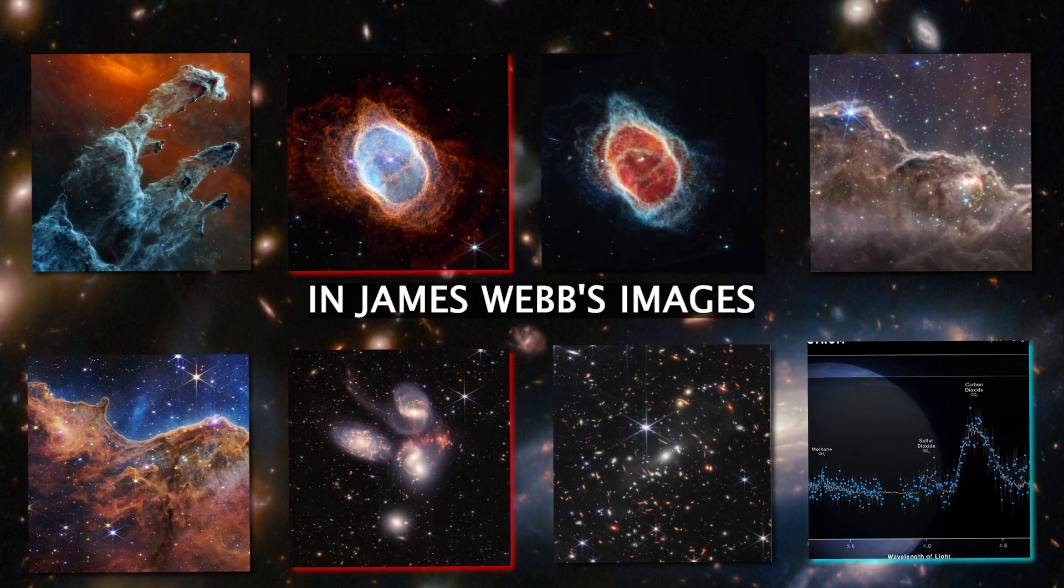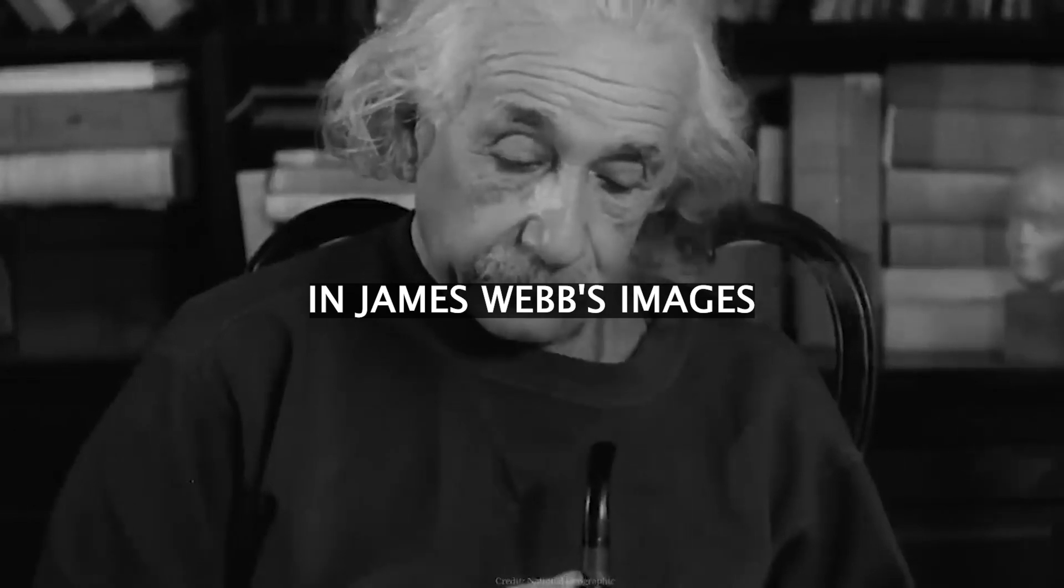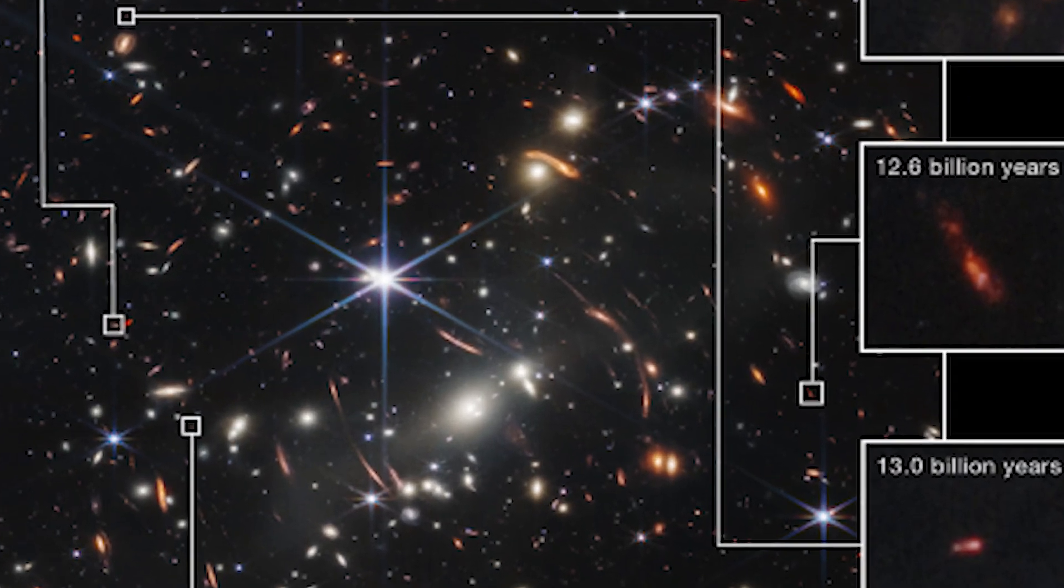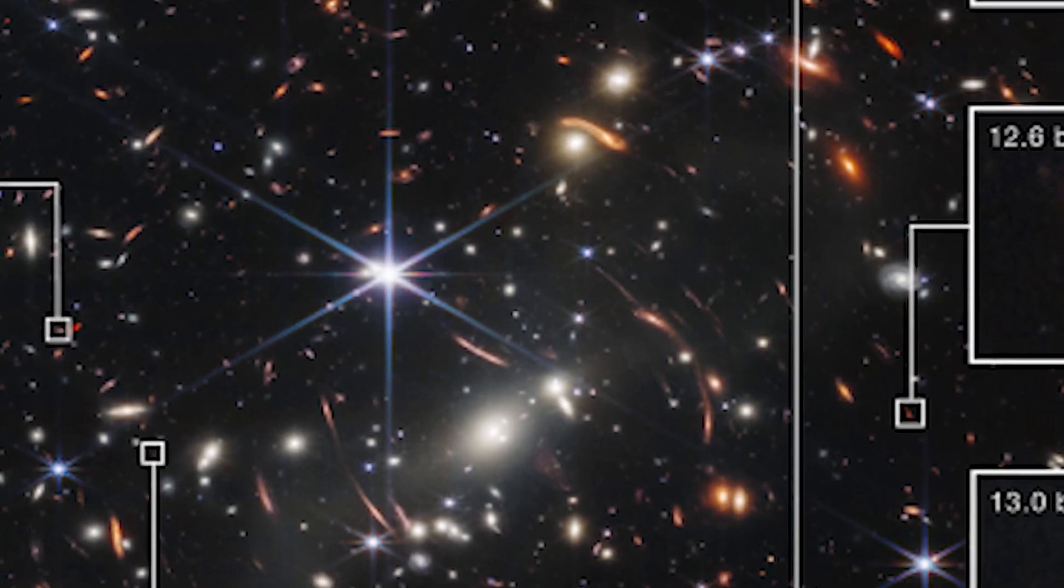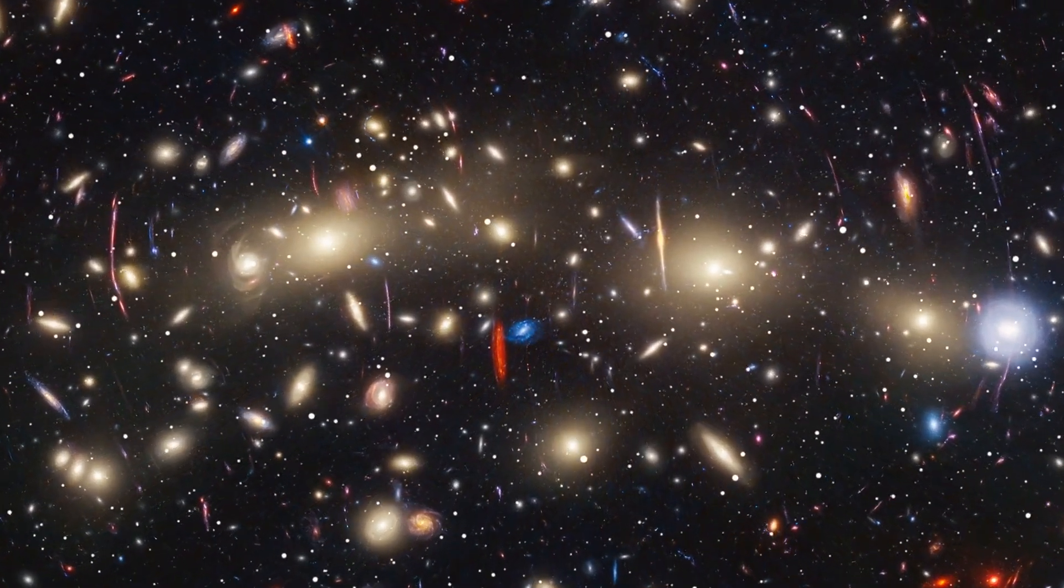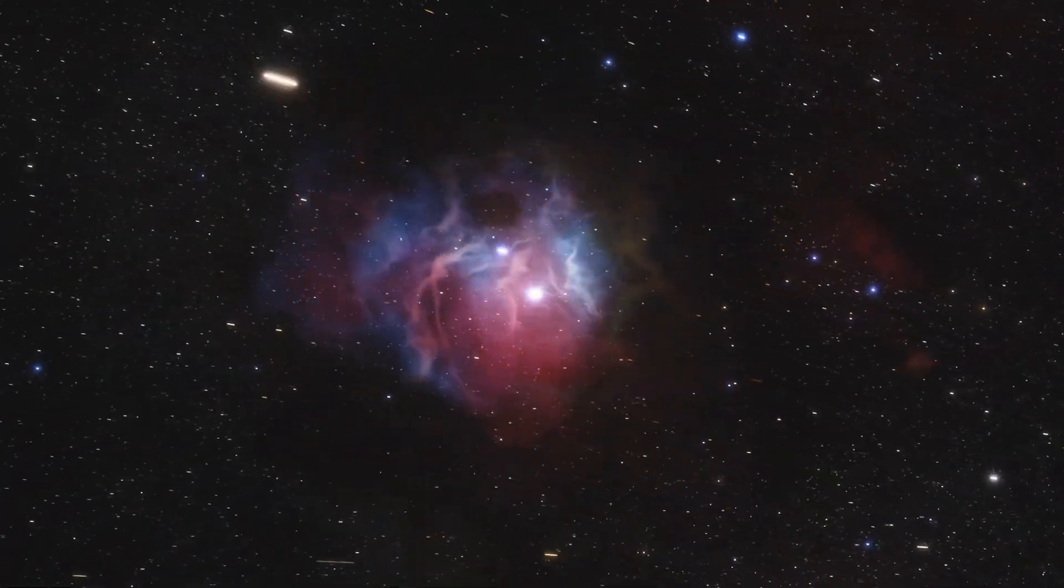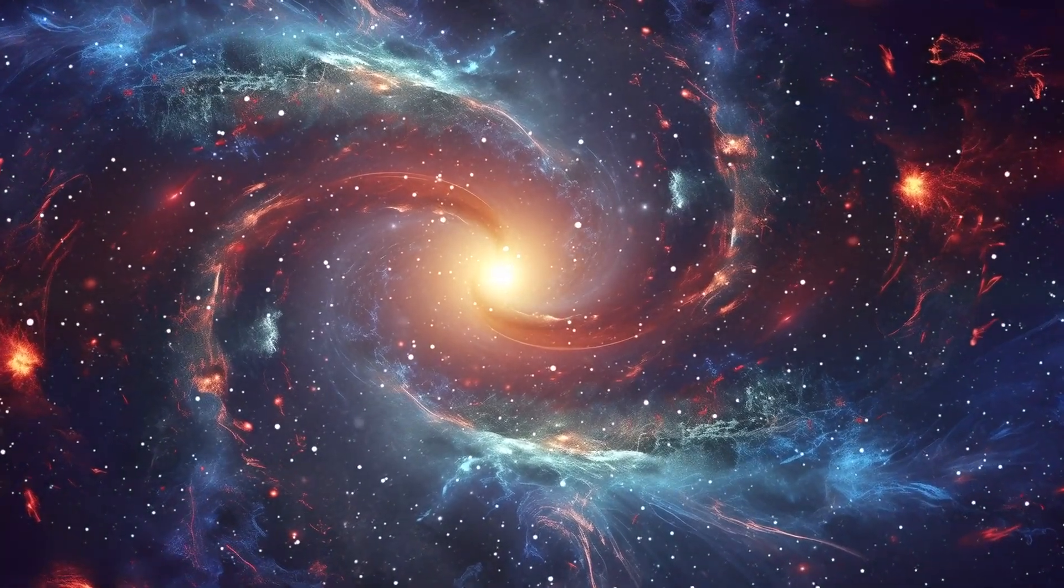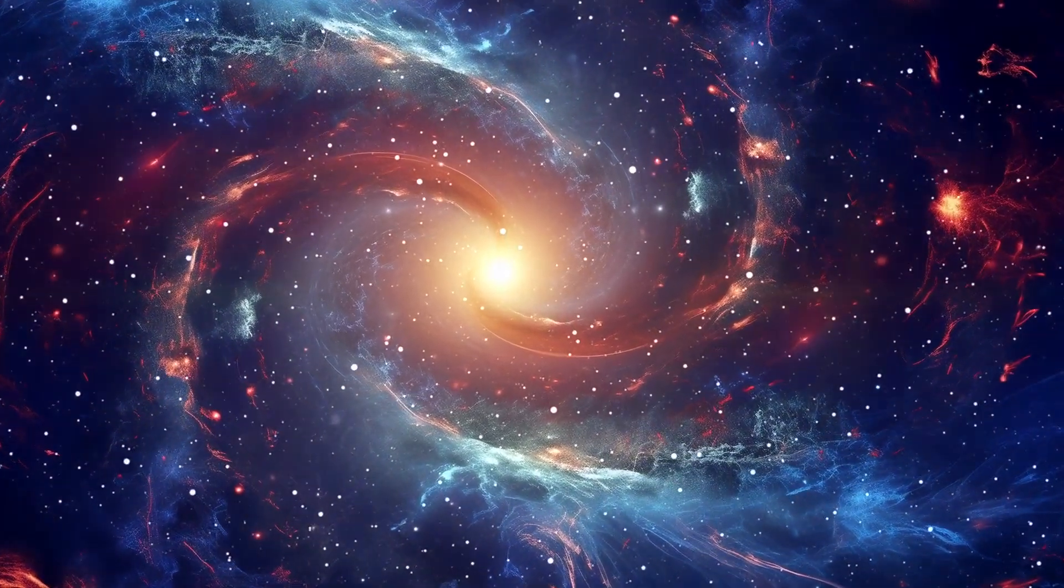In James Webb's images, we see a collection of objects that have left scientists scratching their heads. These items are so peculiar and ancient, they defy easy explanation. Many of them are intricately structured, making it improbable that they are newly formed galaxies from just 300 or 400 million years after the Big Bang.